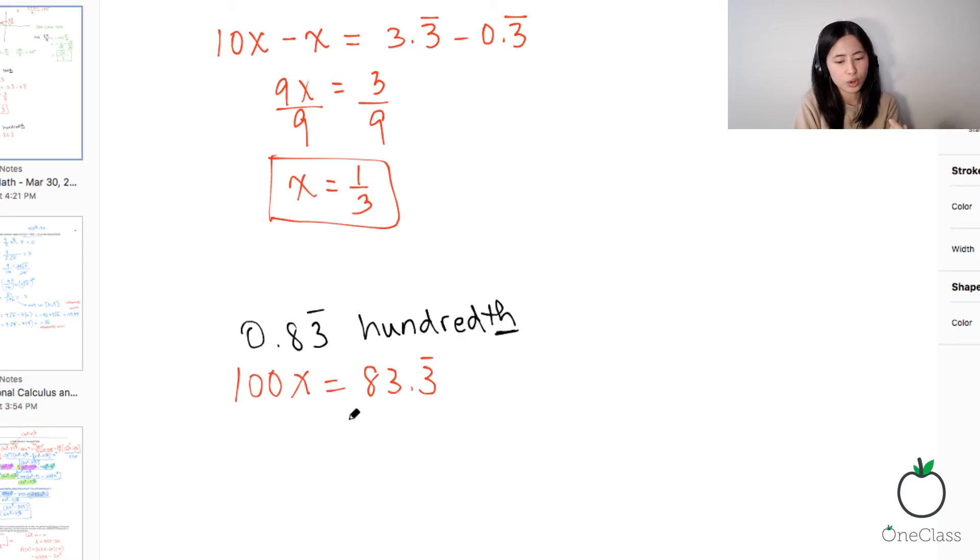So now you're going to think, okay, so how do I get rid of this 3 over here? Does that make sense?